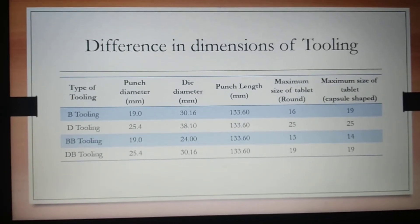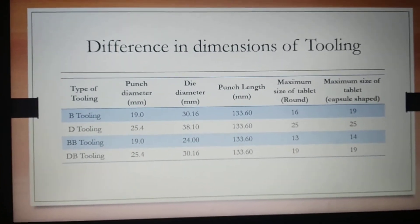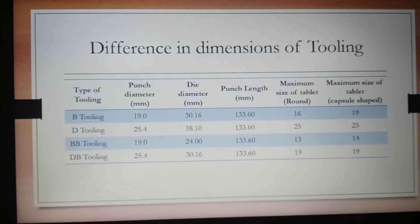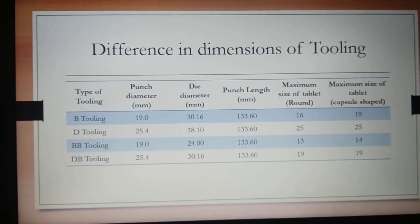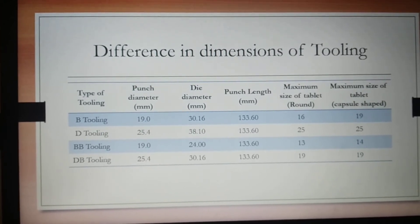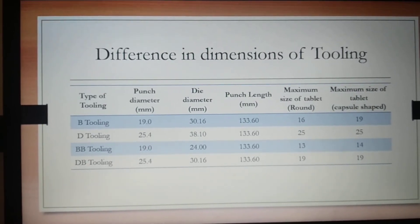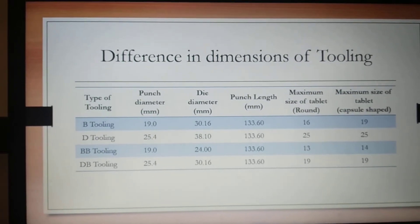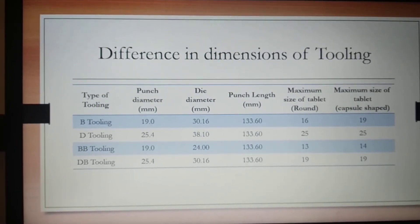D tooling has the highest die diameter at 38.1 mm. The upper punch length is the same for all types of tooling, at 133.6 mm. The maximum size of tablet that can be compressed: for B tooling you can compress 16 mm round tablets, with D tooling up to 25 mm round tablets, for BB tooling it is 13 mm, and for DB tooling it is 19 mm.